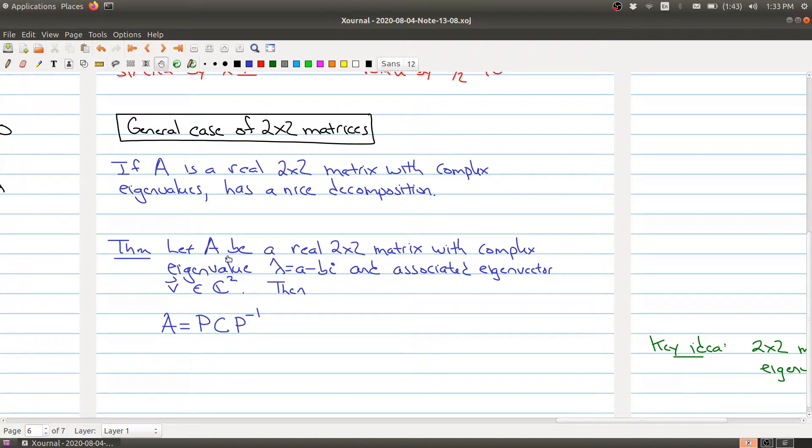Somebody gives you a 2 by 2 matrix with complex eigenvalue. We're interested in only one of the two complex eigenvalues - they come in conjugate pairs. Look at the one where it's a minus bi, not the one with the positive part, and it has some associated complex eigenvector.